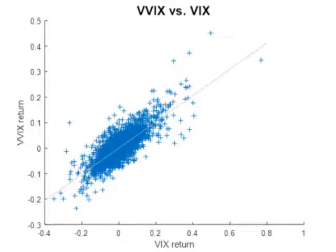The next figure shows the scatter plot of VIX returns versus VVIX returns. It is observed that there is a significant population where VIX and VVIX returns are of opposite signs. We subsequently calculated the number of instances where VIX and VVIX move in the opposite direction. This indeed happens 22% of the time.